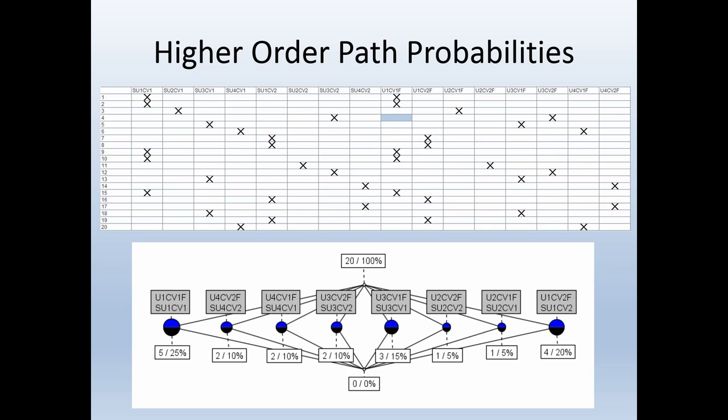If we now build a concept lattice for the higher-order path probabilities, the concept lattice in the bottom shows you immediately the probabilities for these higher-order transitions. So we used as attributes the higher-order transitions, which gives you the paths from start to U1 through C through V1 to the end state, or from S to U2 to C to V1 to the end state, and so on. All these possibilities are used as attributes, and crosses indicate for which objects they are valid. The probabilities can immediately be derived from the concept lattice.